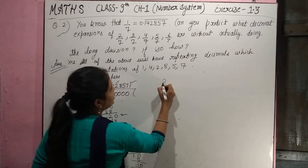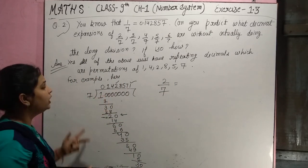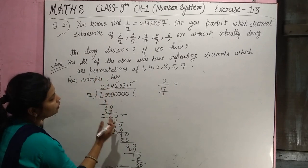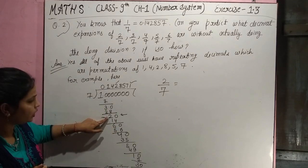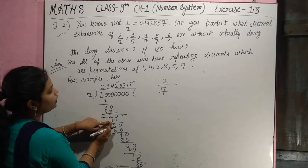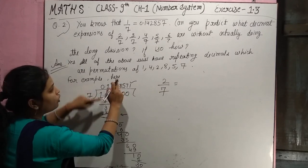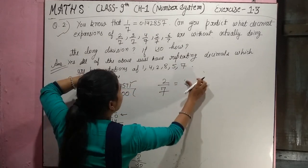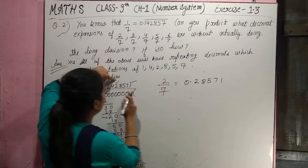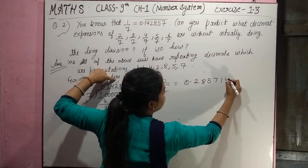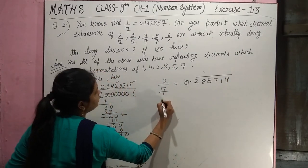For 2 by 7, our dividend should be 2. We look for where remainder 2 appears in the division of 1/7. Since 7×2=14, our answer will start from that point: 0.285714 bar. For 3 by 7, the dividend is 3, so we look for where remainder 3 appears in the sequence: 0.428571 bar.